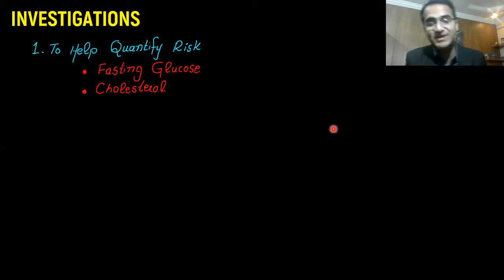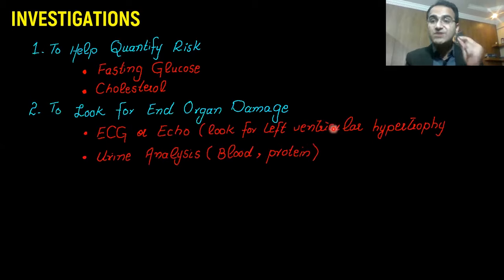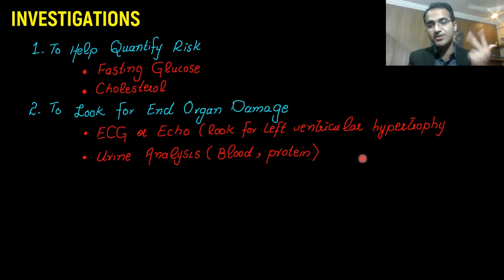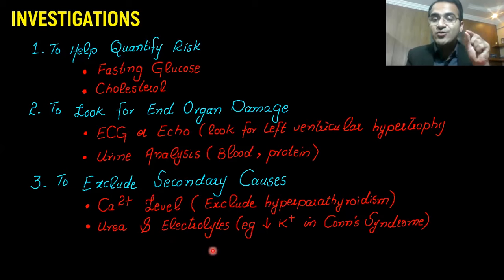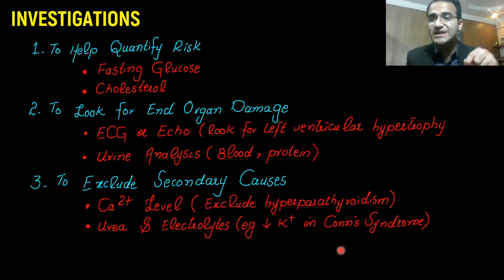Investigations needed in a hypertensive patient include: fasting blood glucose to exclude diabetes, cholesterol levels, ECG or ECG to look for left ventricular hypertrophy, and urinalysis to check for kidney damage — looking for proteins and RBCs in urine. To exclude secondary causes, check calcium levels to exclude hyperparathyroidism, and urea and electrolytes — specifically looking for hypokalemia, which is seen in Conn's syndrome, a cause of secondary hypertension.